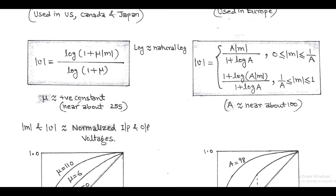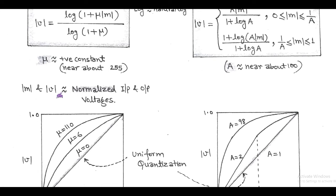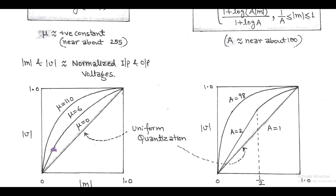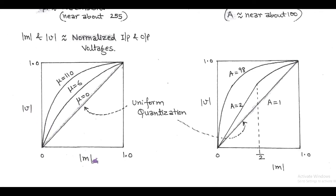When we plot Mu law on the input-output voltage characteristic, that is |V| versus |M|, we have some observations. When the value of μ equals 0, we have uniform quantization. But when the value of μ increases, we get non-linear characteristics that represent the compression process.